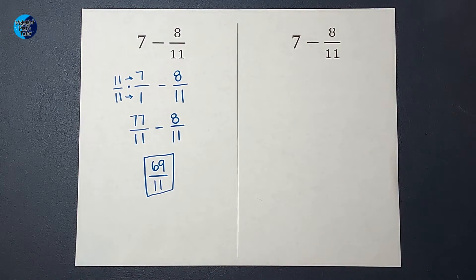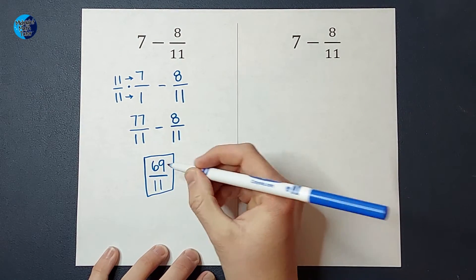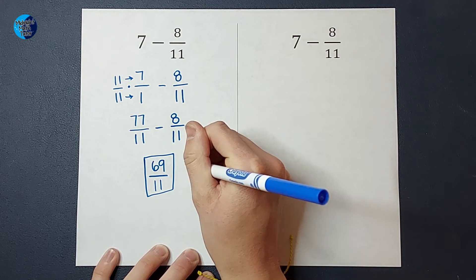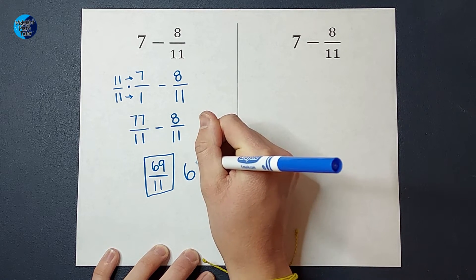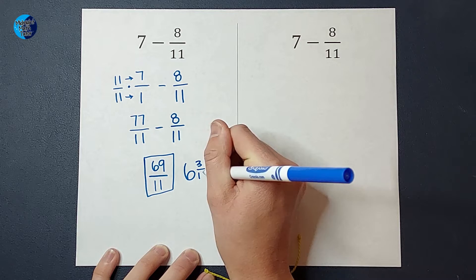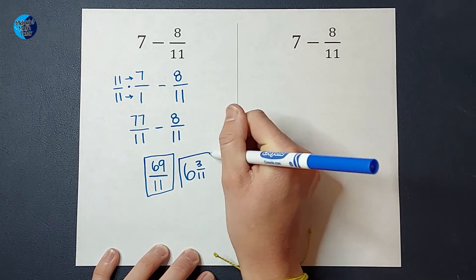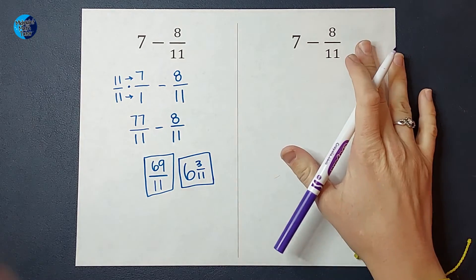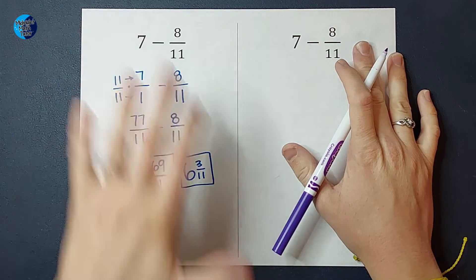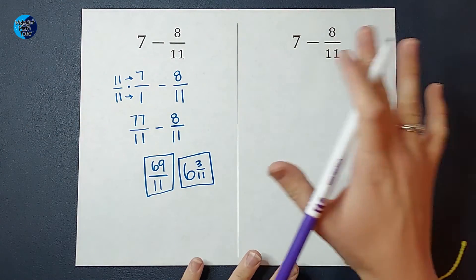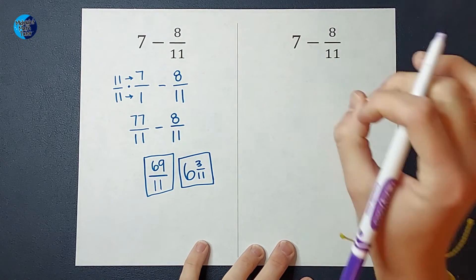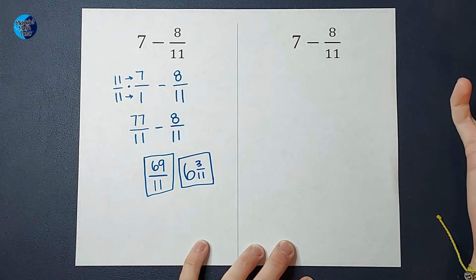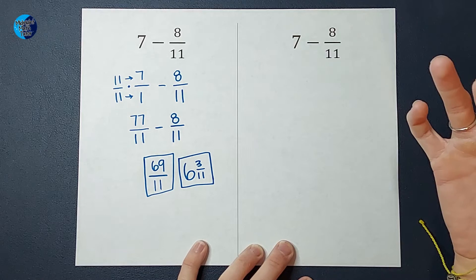If I want to write it as a mixed number, I say 11 goes into 69 six times with three left over, and we are still in elevenths. All right, there's that guy. Okay, on my video where I did this, the longer one I linked earlier, I had several comments telling me of a way some people prefer to do this. So let's go ahead and look at that.